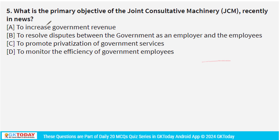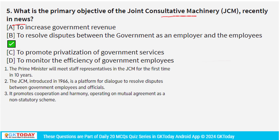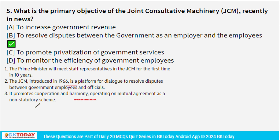Question 5: the primary objective of the Joint Consultative Machinery is to resolve disputes between the government as an employer and its employees. JCM is a platform for dialogue between government employees and officials to resolve disputes peacefully. It was initially introduced in 1966 to promote harmonious relations and cooperation between the central government and its employees. JCM is a non-statutory scheme based on mutual agreement.